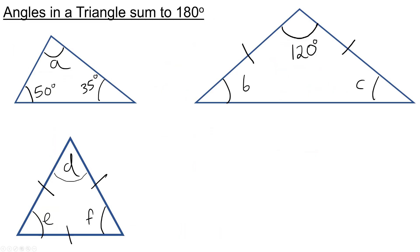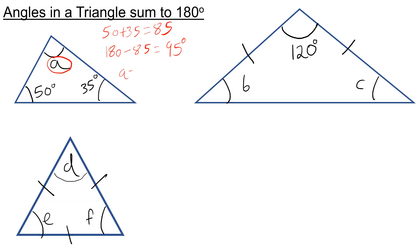Finally, angles in a triangle add up to 180 degrees. In the first question, we want to work out A. We add up the angles we know: 50 and 35, which is 85. Then we subtract this from 180 — so 180 take away 85 — which is going to be 95. So A is equal to 95 degrees.